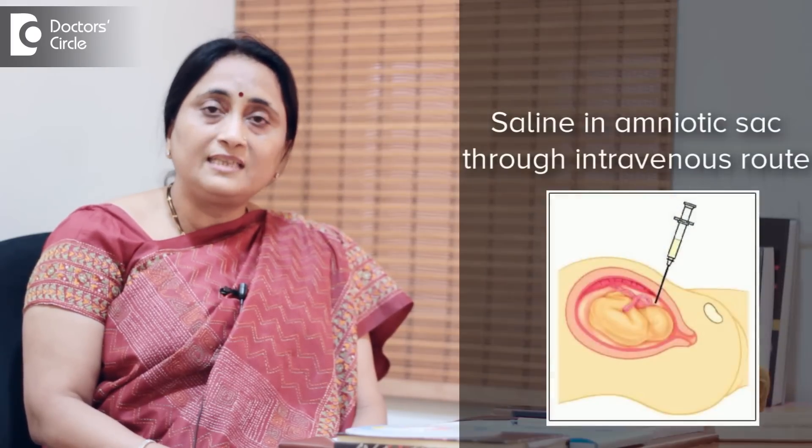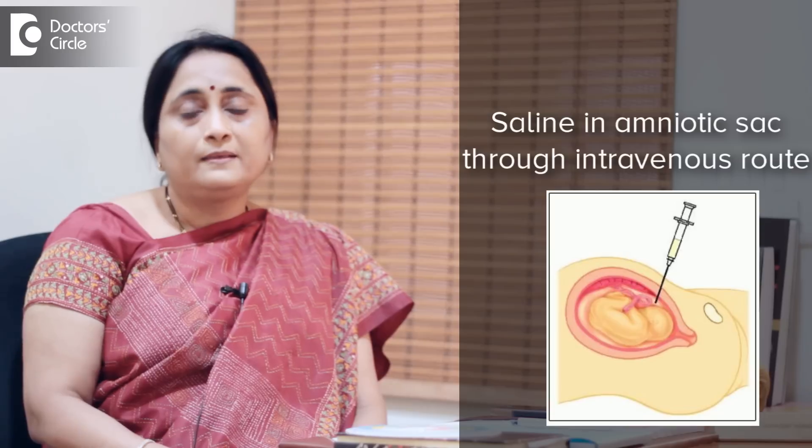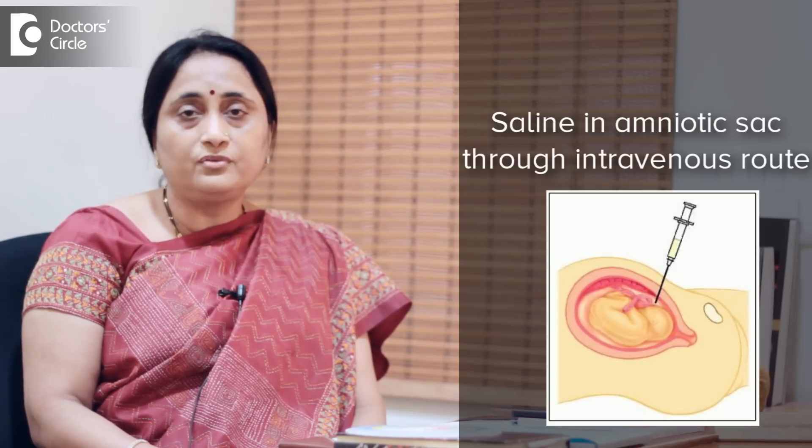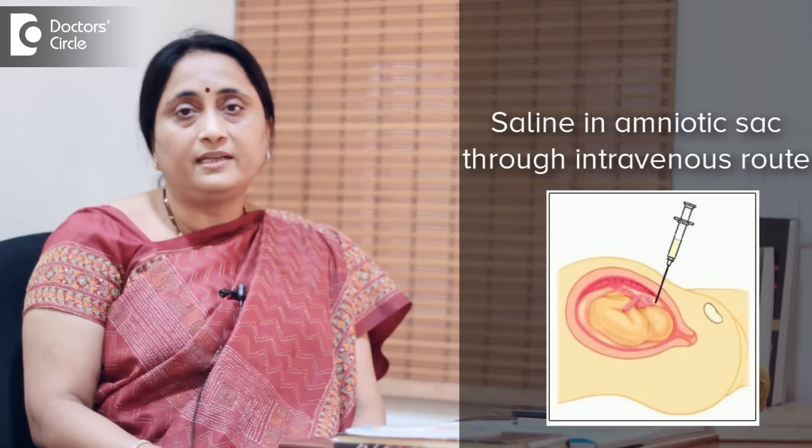Another method of treating oligoamnios is putting saline into the amniotic sac through an IV line, similar to how a regular IV infusion is given. There are some complications which may arise from this procedure, such as infection or precipitating labor, but if we want to buy a few hours to a couple of days we can do this and try to deliver the baby when it is mature enough to survive outside the womb.